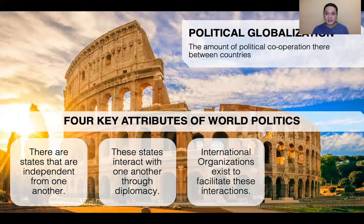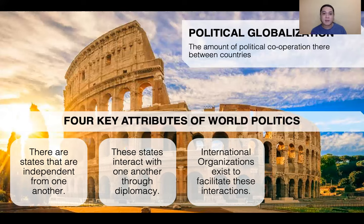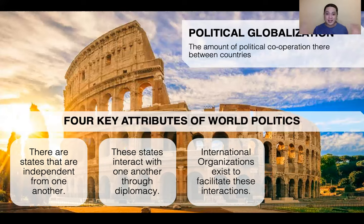The next attribute is that international organizations exist to facilitate these interactions. As we discussed, international organizations exist as part of the structures of globalization, and the global interstate system is also part of that structure. International organizations serve as the facilitator, mediator, and negotiator — the bridge from one state to another in diplomatic relations.